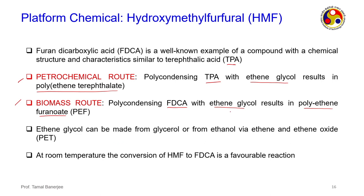Ethylene glycol for PEF can be manufactured from glycerol, or from ethanol via ethene and ethylene oxide. The primary challenge is that HMF is not stable in acidic media — it immediately decomposes to levulinic acid (or levulinic acid esters) and formic acid upon addition of two water molecules. This instability makes HMF processing very difficult.